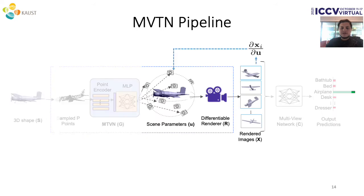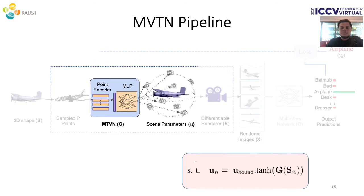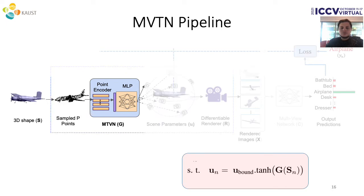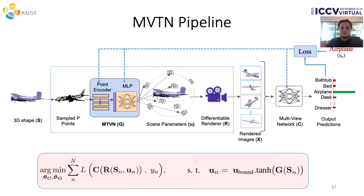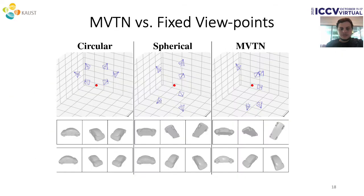Our MVTN is trained end-to-end with the Multi-View network without extra supervision. The MVTN pipeline consists of a differentiable renderer R that renders the object S according to some scene parameters U to get the Multi-View images X. The goal of MVTN is to predict the parameters U — the azimuth and elevation angles — for every object S. We extract coarse features from the object and learn an MLP to predict the scene parameters. The pipeline is trained end-to-end with only the task loss, which is cross-entropy for classification. Here we show how these learned viewpoints for the car object differ from fixed, circular, or spherical viewpoints.